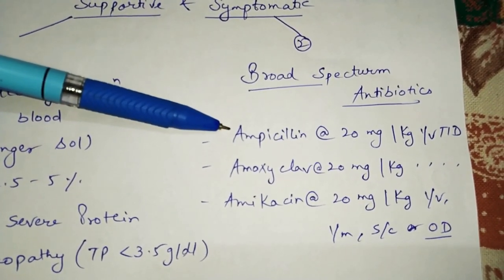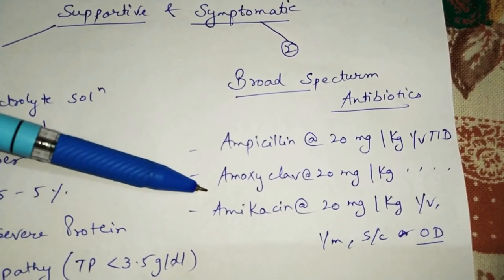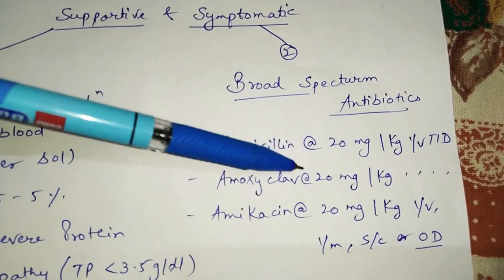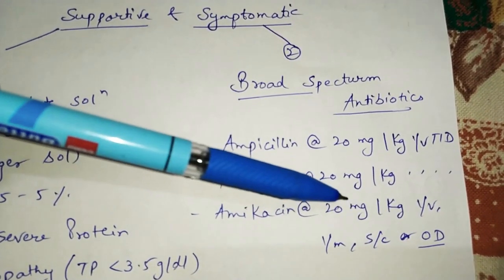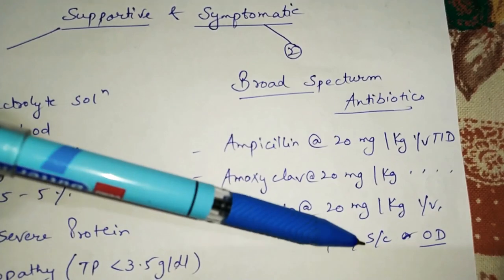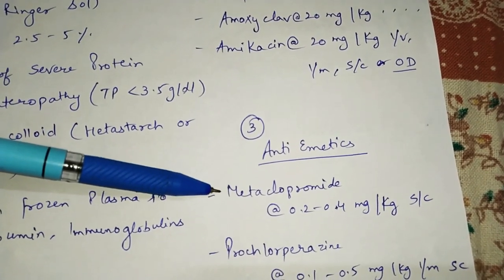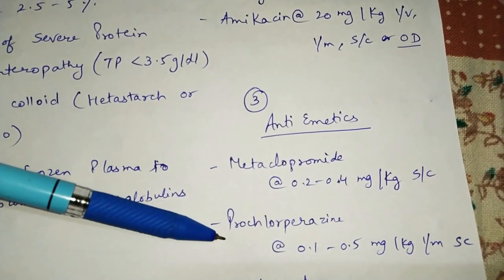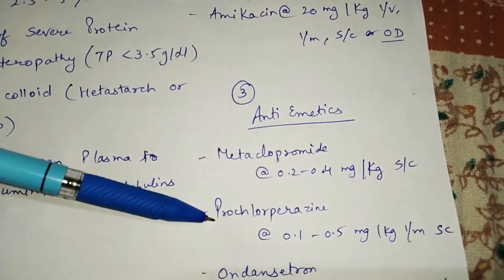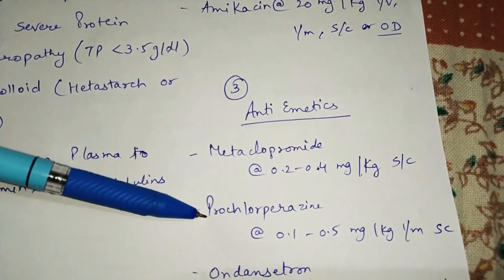Broad-spectrum antibiotics include ampicillin at 20 mg/kg IV three times a day, and amoxicillin-clavulanic acid at 20 mg/kg IV, IM, or subcutaneous once a day. Antiemetic drugs include metoclopramide at 0.2–0.4 mg/kg subcutaneous, and prochlorperazine at 0.1–0.5 mg/kg intramuscular or subcutaneous.